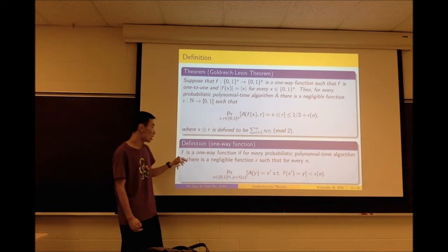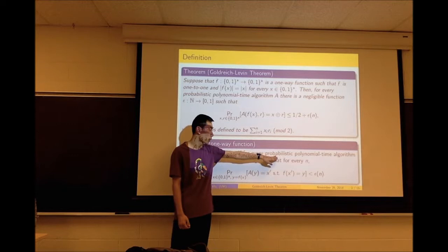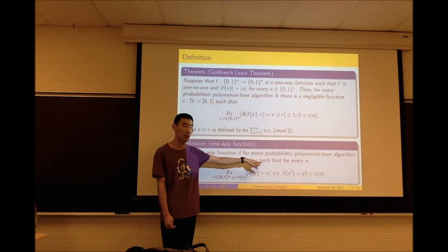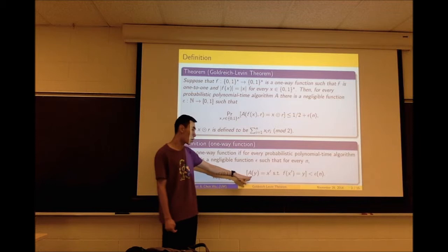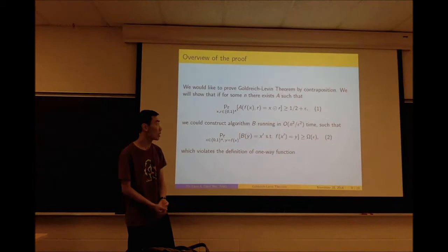One-way function basically says: for every probabilistic polynomial time algorithm A, there is a negligible function ε such that for every n, the probability over all x, given y equals f(x), that A(y) outputs x′ such that f(x′) equals y, is smaller than ε.